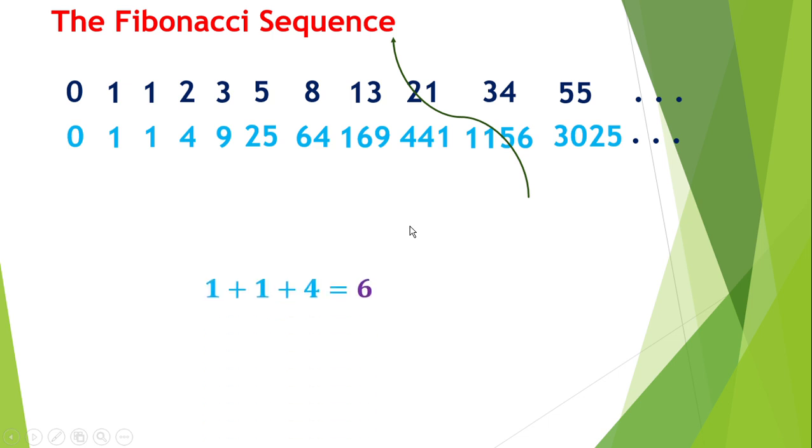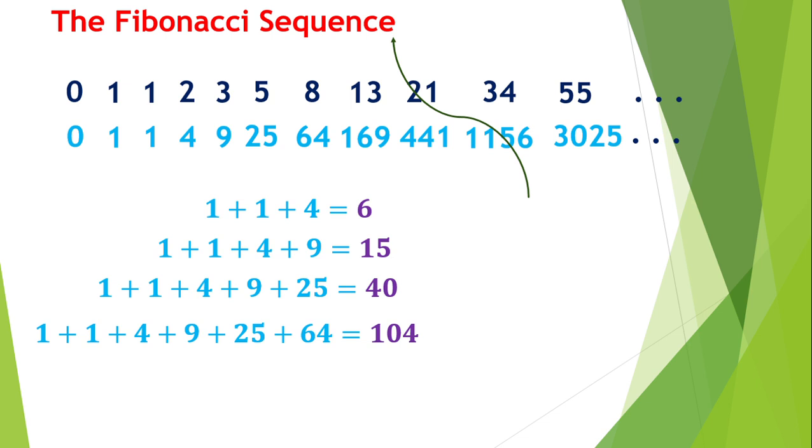One plus one plus four is six, one plus one plus four plus nine is fifteen, one plus one plus four plus nine plus twenty-five is forty, one plus one plus four plus nine plus twenty-five plus sixty-four is one hundred four. But look: two times three is six, three times five is fifteen, five times eight is forty, and eight times thirteen is one hundred four. We can see that three, five, eight, thirteen are Fibonacci sequence.